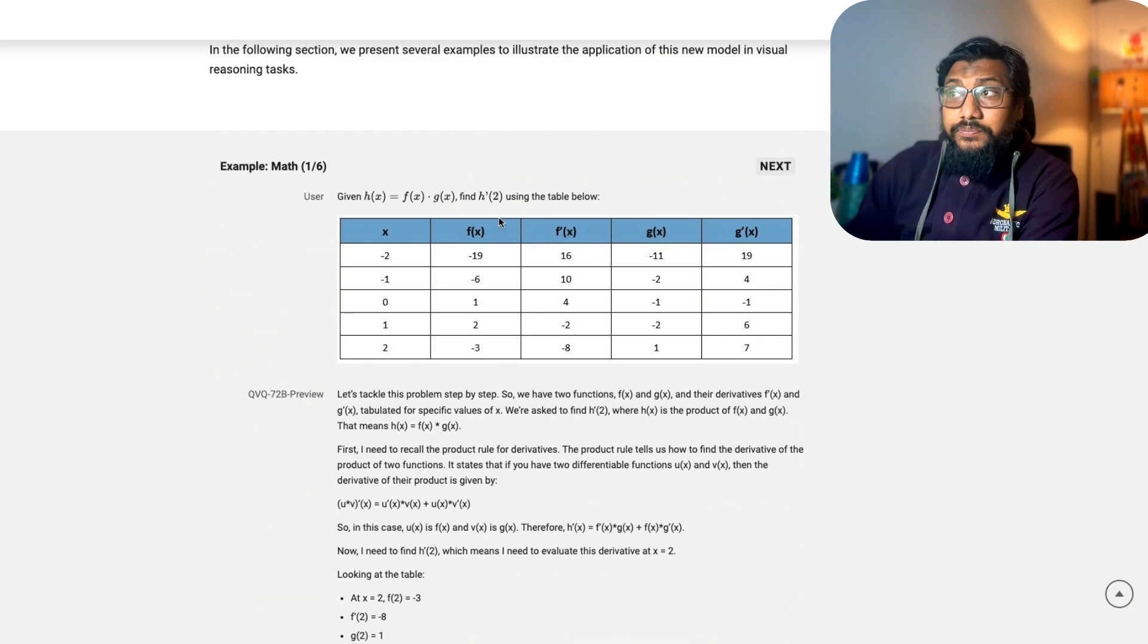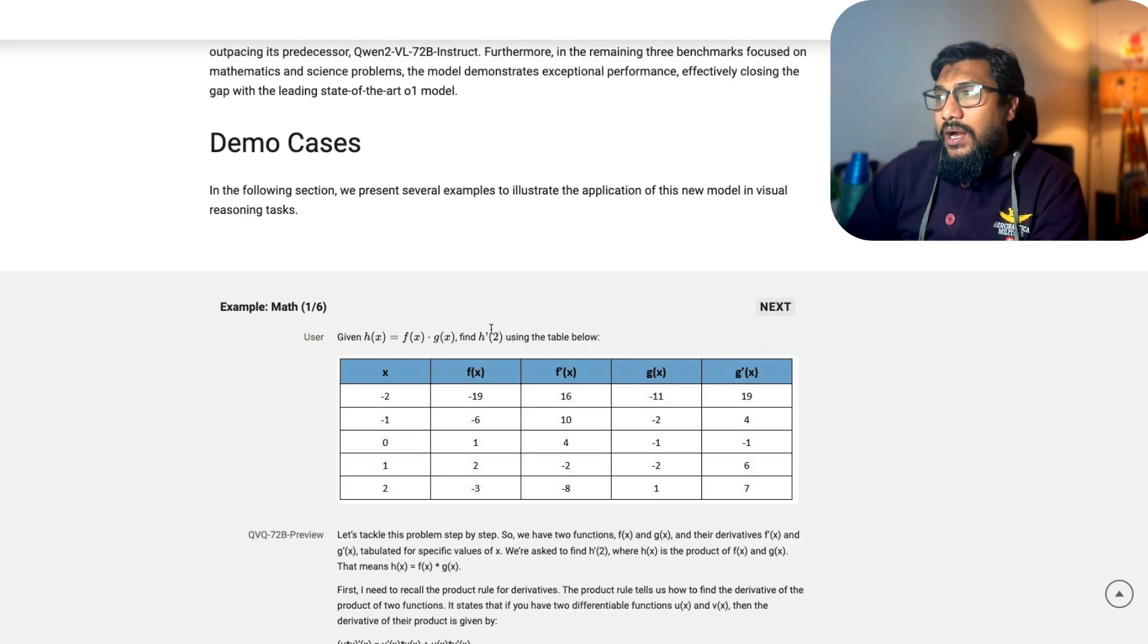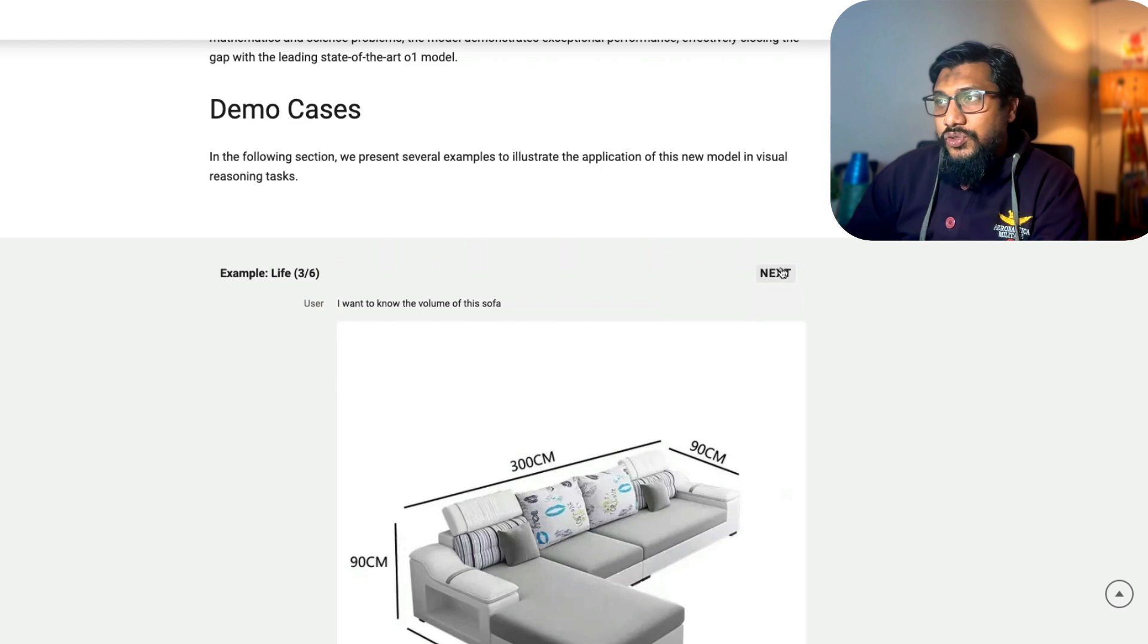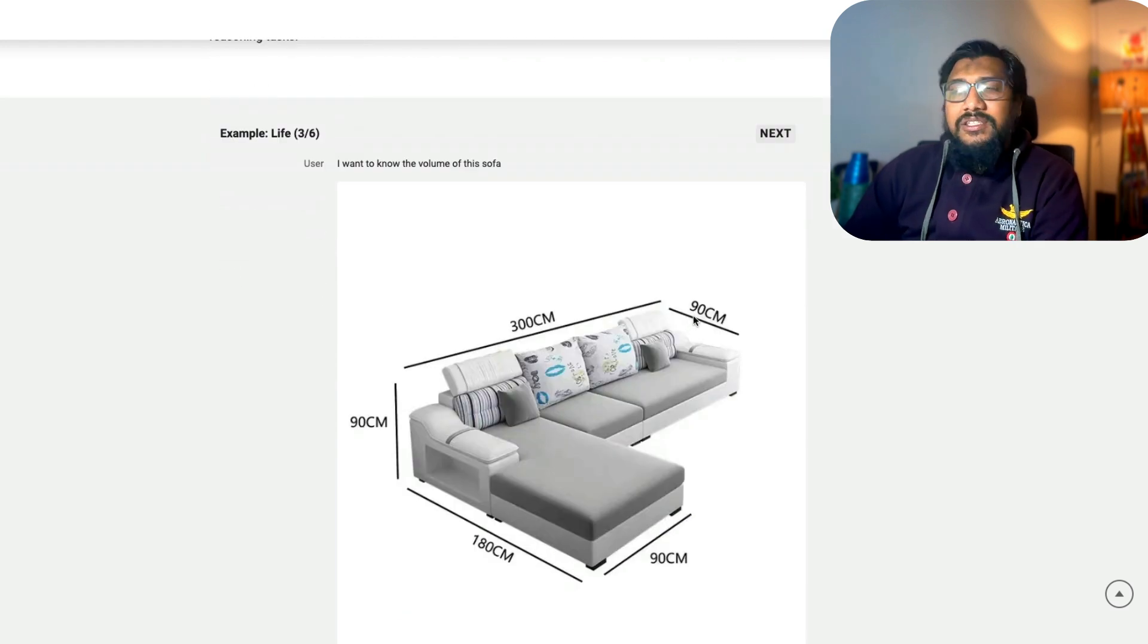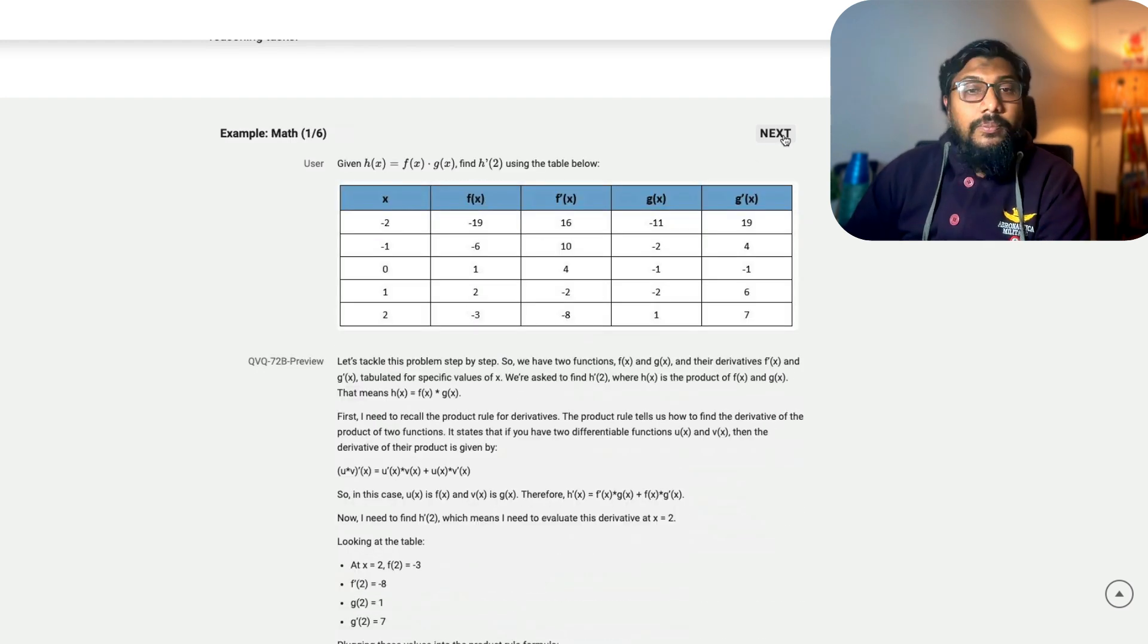This model, they've given a couple of examples where the model has done extremely well. One is a math problem. They've given the table and then said given h of x is equal to f of x times g of x, find h prime of 2. They've got the next problem which is like a graphical problem, visual reasoning. And there is this nice interesting one where you're given the sofa and asked for the volume, and some Chinese problems as well.